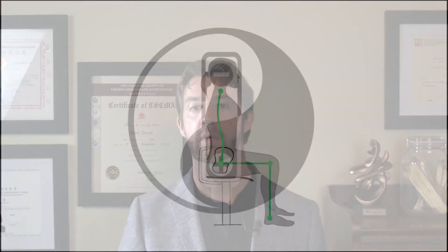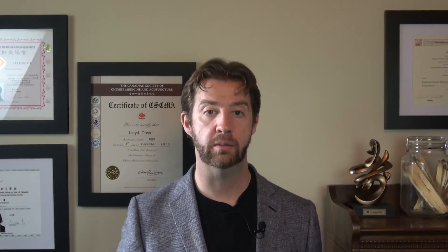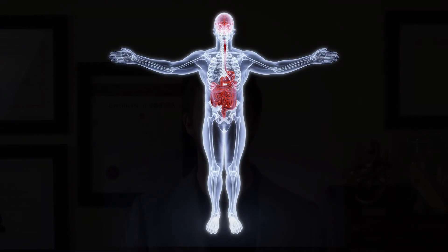The upper and lower polarities — you can also call them the upper and lower dan tien — refer to the two brains of the body: one in our head and the other in our gut.